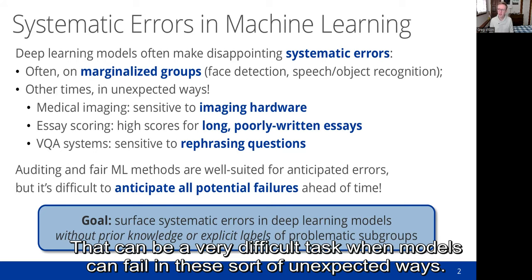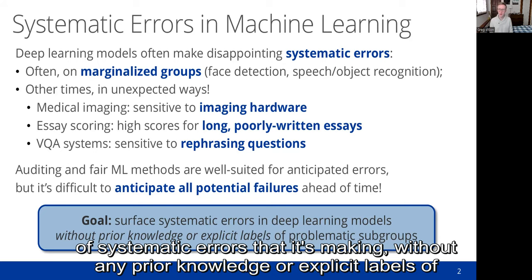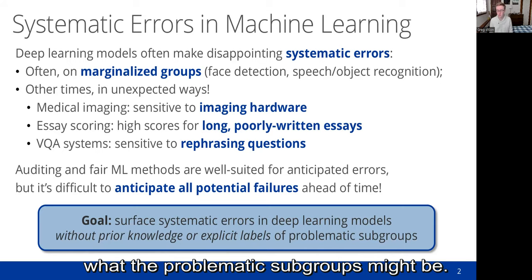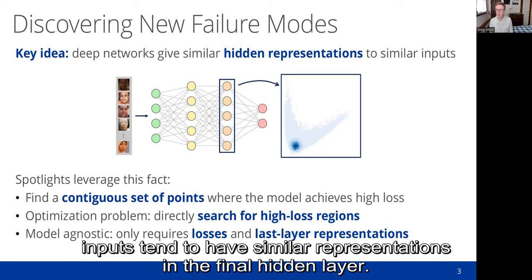The goal of our work is to take a trained deep learning model and surface the sorts of systematic errors that it's making without any prior knowledge or explicit labels of what the problematic subgroups might be. The way that we do this is we use a fact about deep neural networks, which is that semantically similar inputs tend to have similar representations in their final hidden layers.